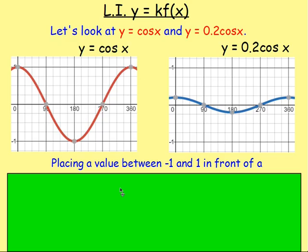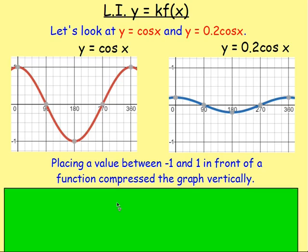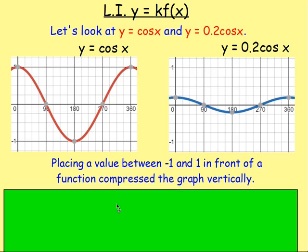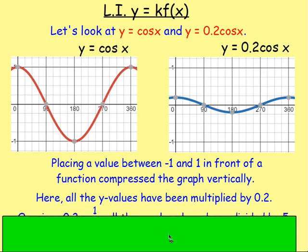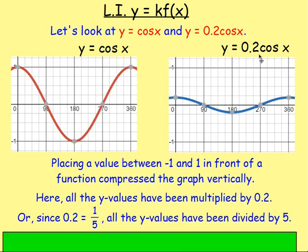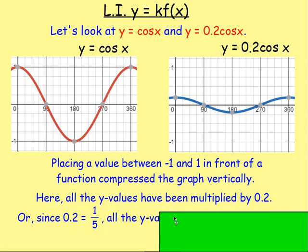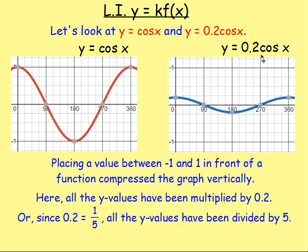So placing a number between negative 1 and 1 in front of a function will compress the graph vertically. So it's going to squish it. Here, all the y values have been multiplied by 0.2. So again, instead of this point here being 0,1, if you take the 1 and multiply it by 0.2, you will get 0.2. So that will have a maximum there at 0.2. Or what you could say is because 0.2 is 1 fifth, I suppose really we've taken a fifth of all the y values. So we've divided the y values by 5. Either way, if the number is less than 1, it's going to compress the graph. And if it's bigger than 1, it's going to stretch the graph.